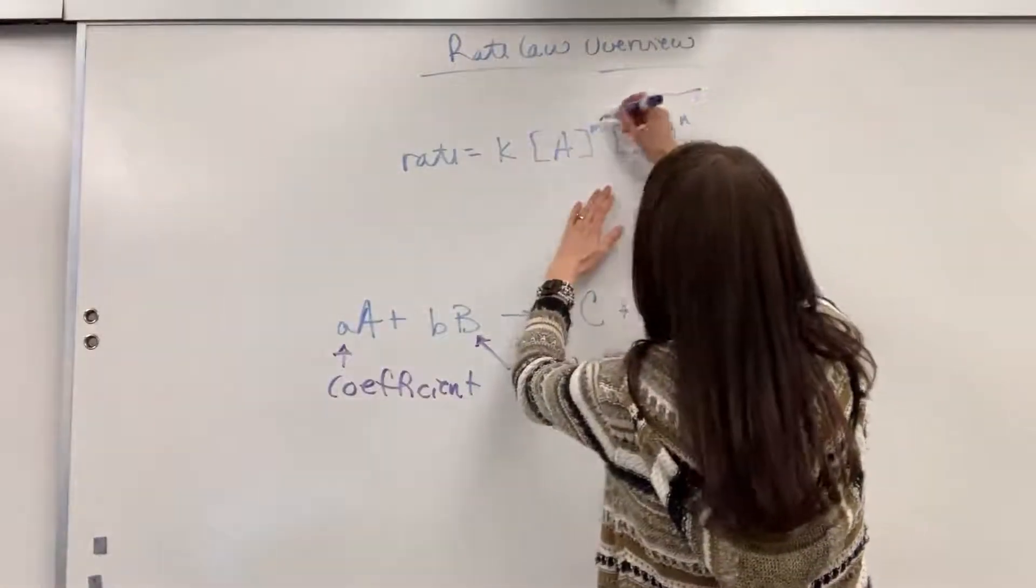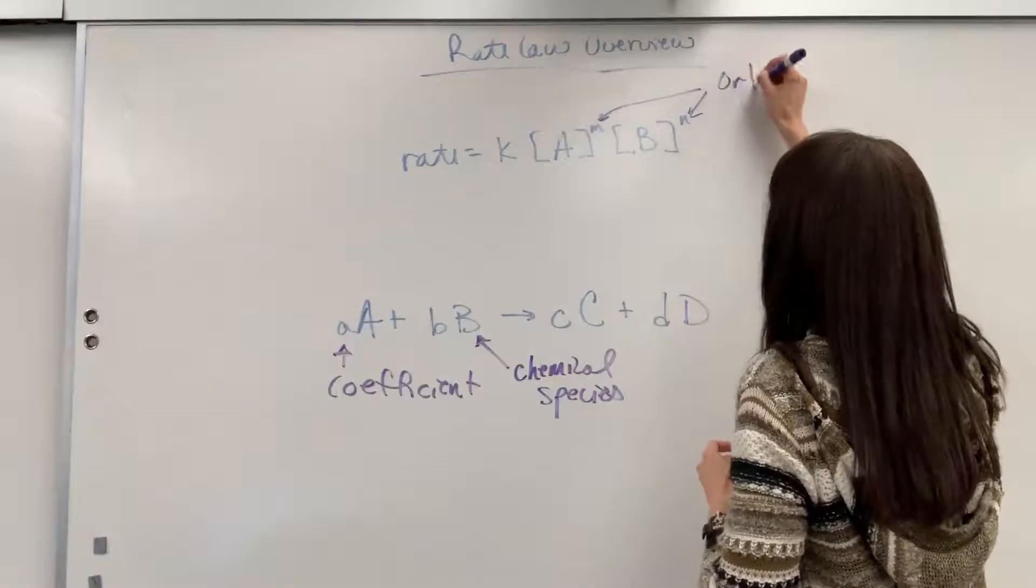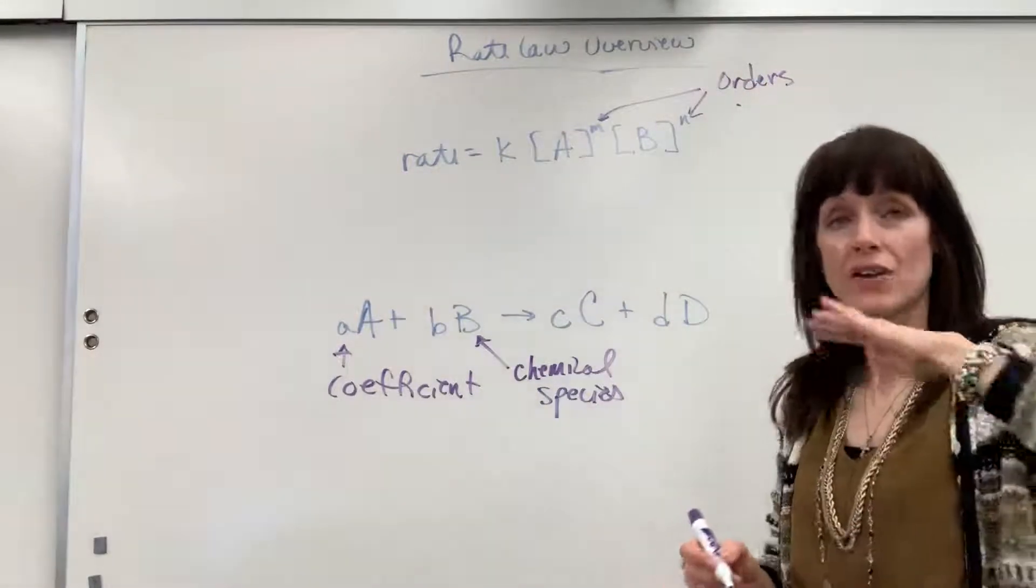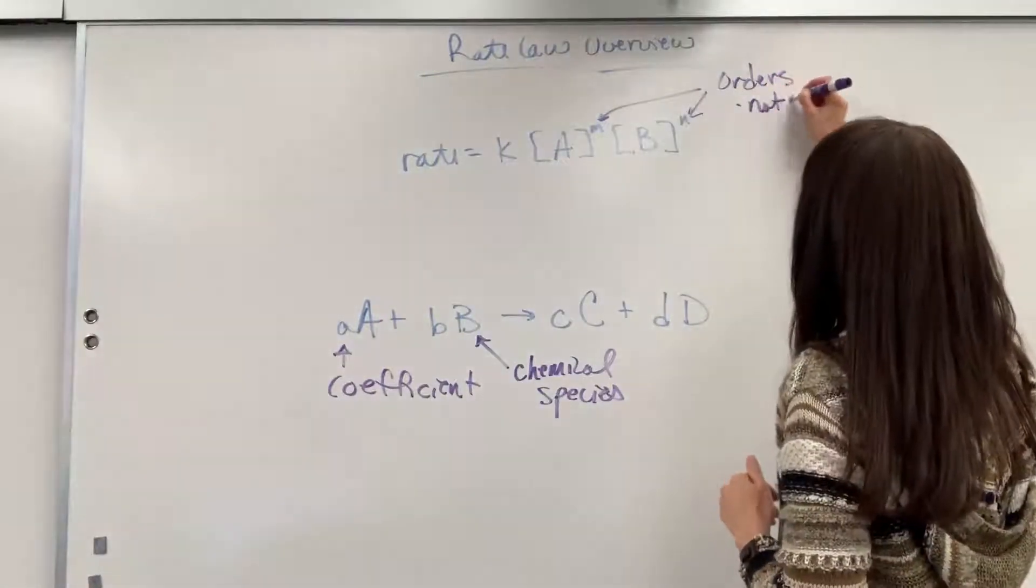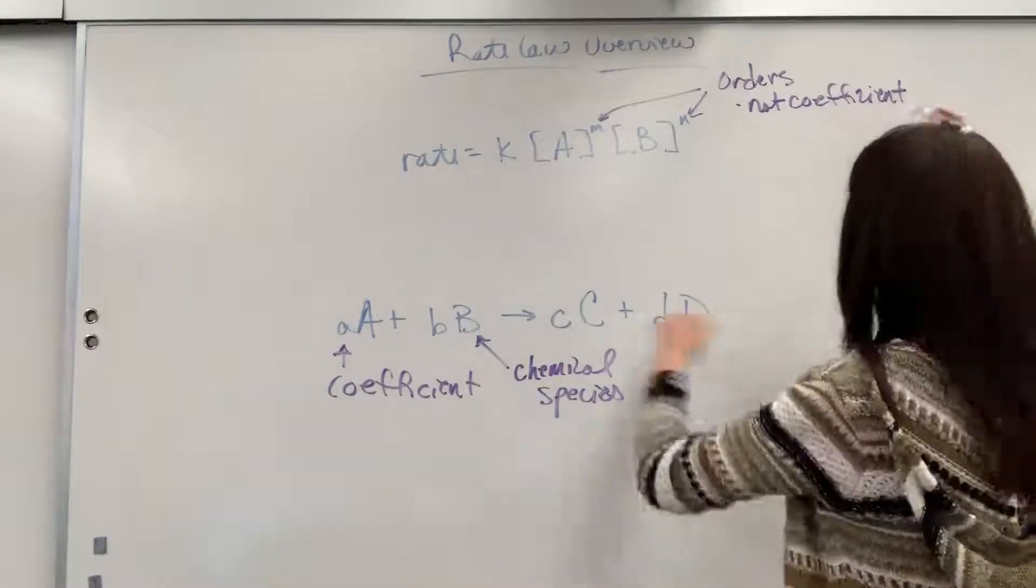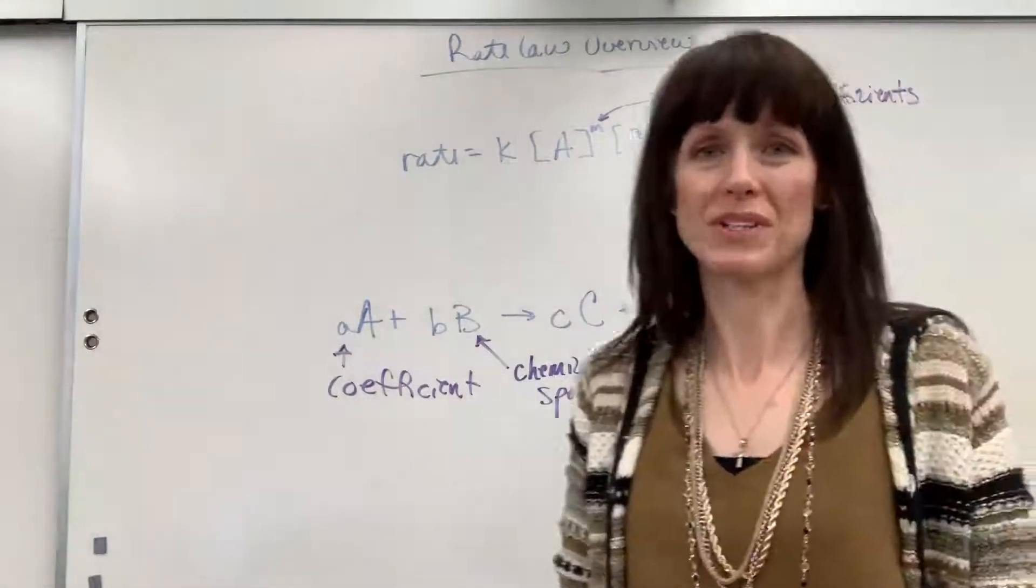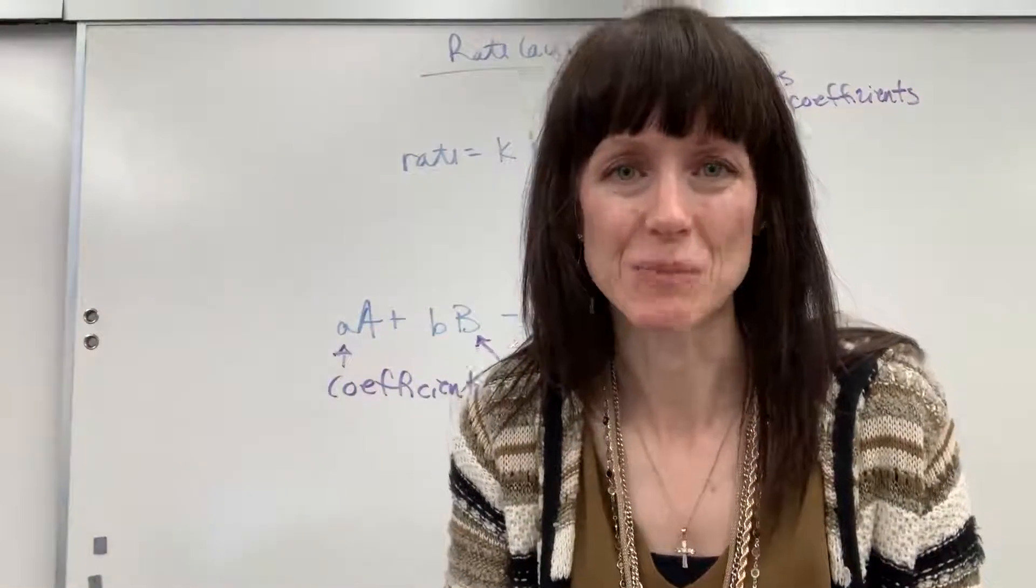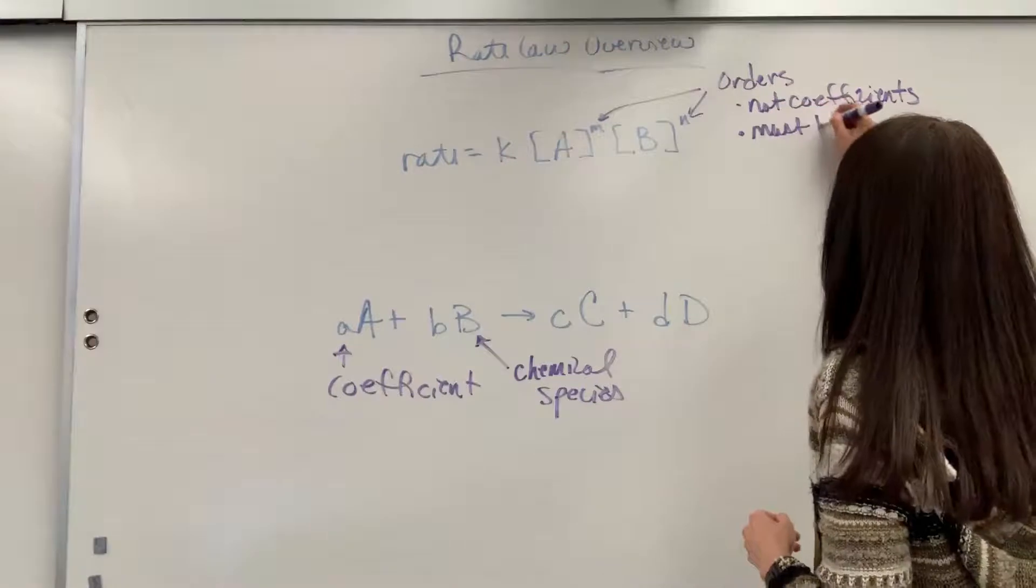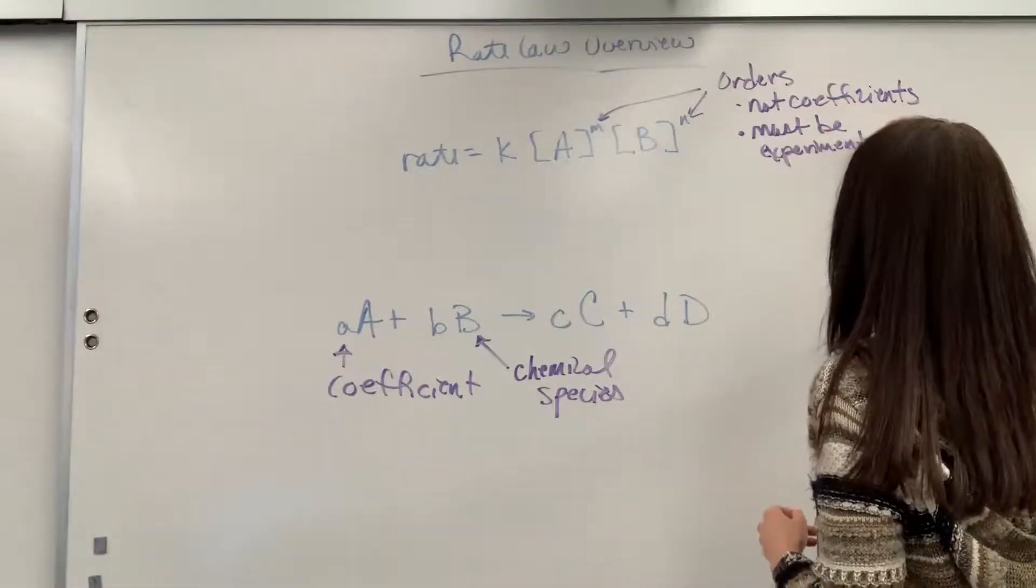Let's put down that this M and N, those are called orders. And then two notes on this. They are not coefficients. They're not the coefficients from the chemical formula, the chemical equation. And number two, super important. They have to be experimentally determined. So must be experimentally determined.